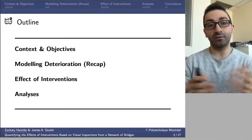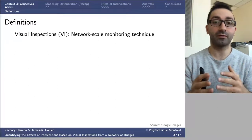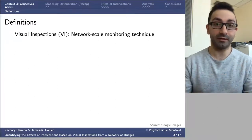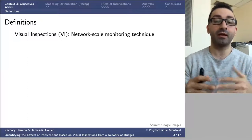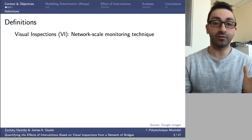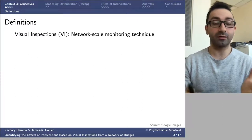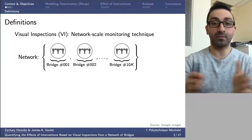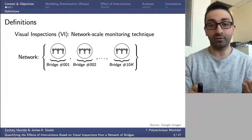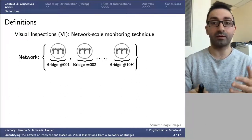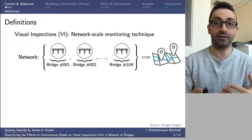Starting with definitions: visual inspection is a network-scale monitoring technique that allows us to monitor the health state of bridges within the network. In our context, the network is composed of around 10,000 bridges existing within a certain region — in our case, the province of Quebec.